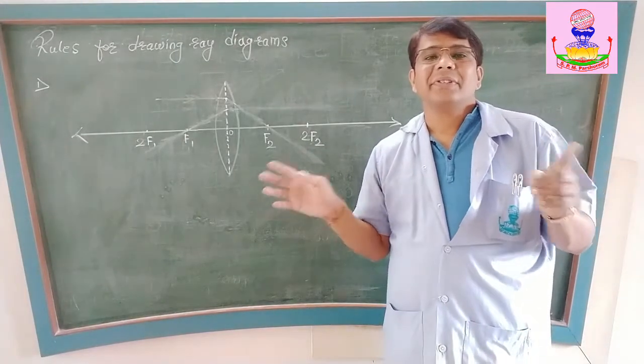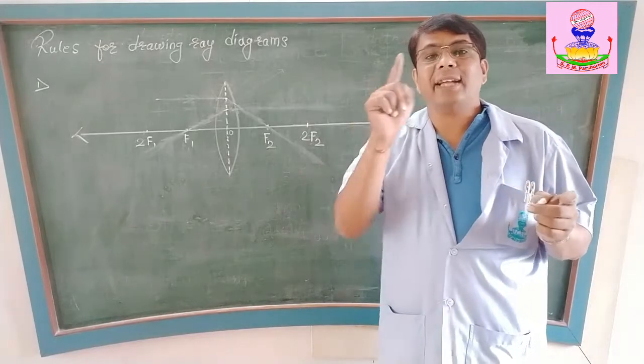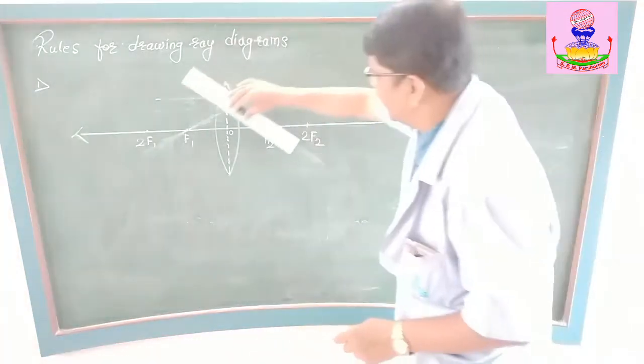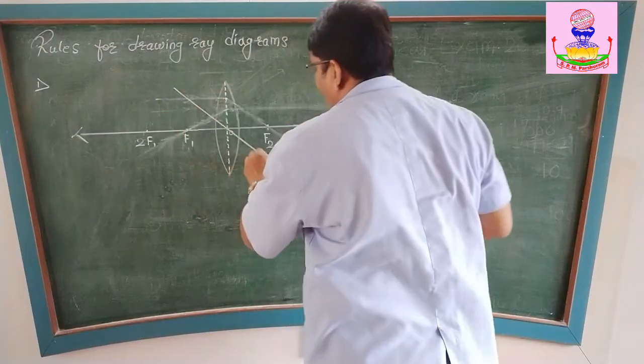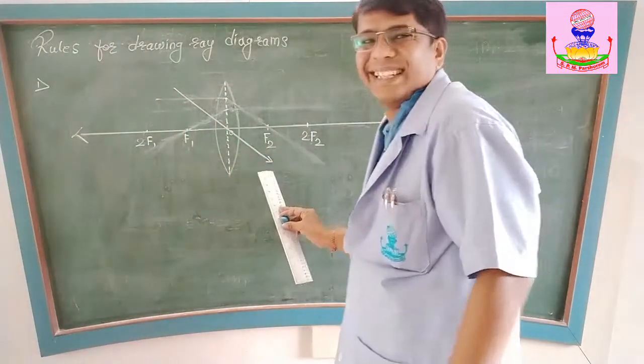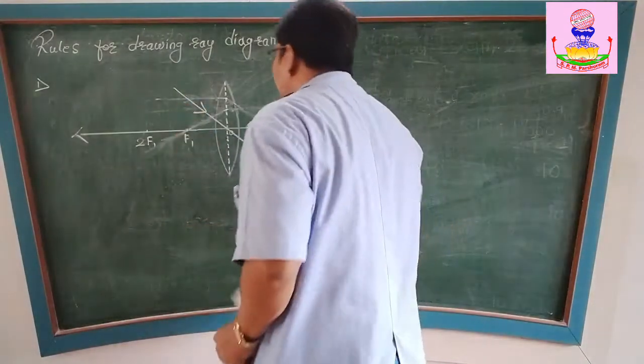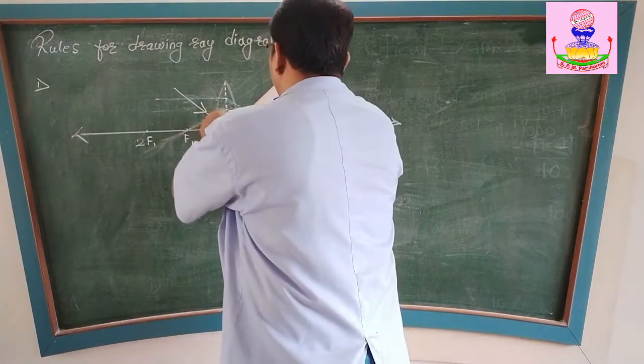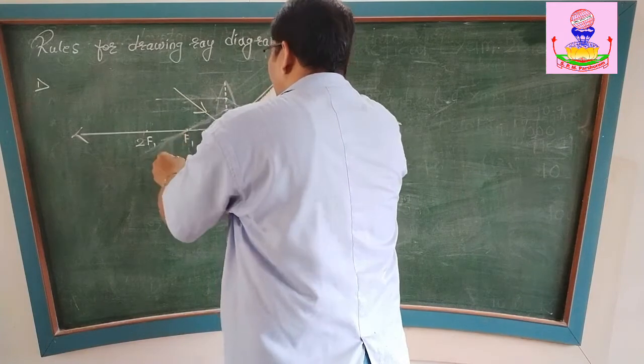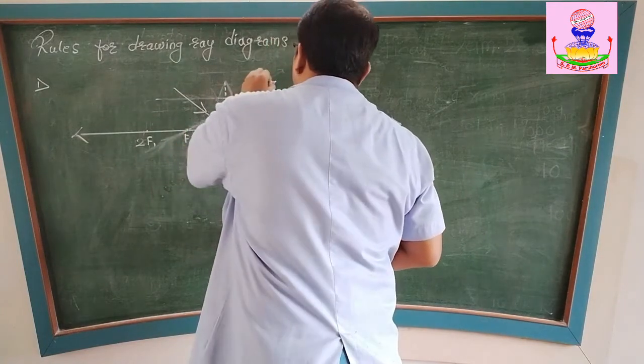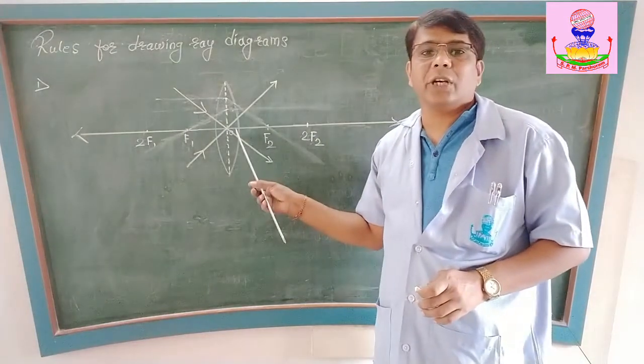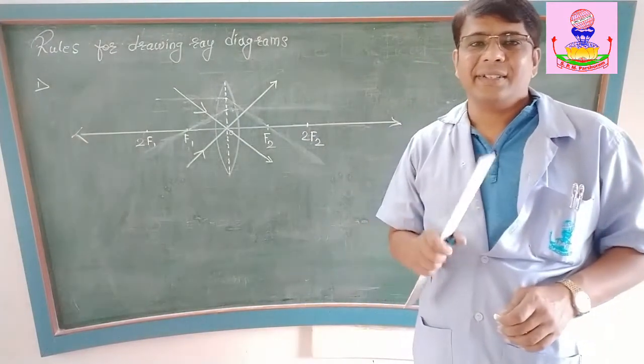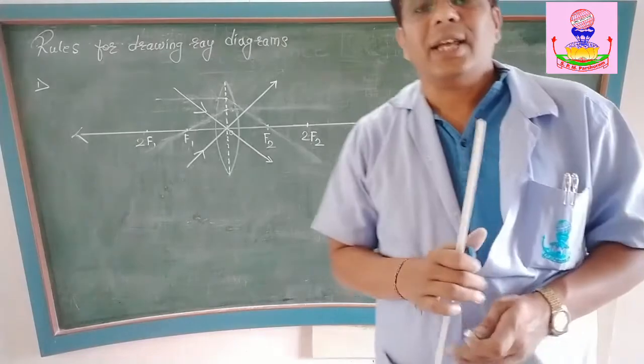The third ray of light is where the ray of light which passes through optical center goes undeviated. Because there is no refraction of light at that particular point. If it is incident this way, it will go undeviated this way. And suppose if it is incident this way, then it will be going this way. So it goes undeviated through the optical center. Understood? Thank you.